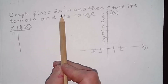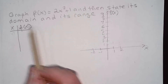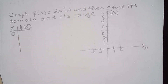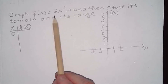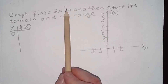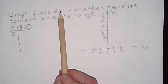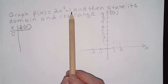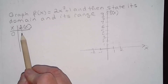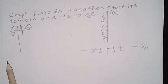If we choose x equal to zero, that's always a good choice. Because if you notice, if I replace x with zero, this whole term disappears and I'm left with just one. So when x is equal to zero, f of x is equal to one. We can also say f of zero is equal to one. So zero, one is a point on the graph.